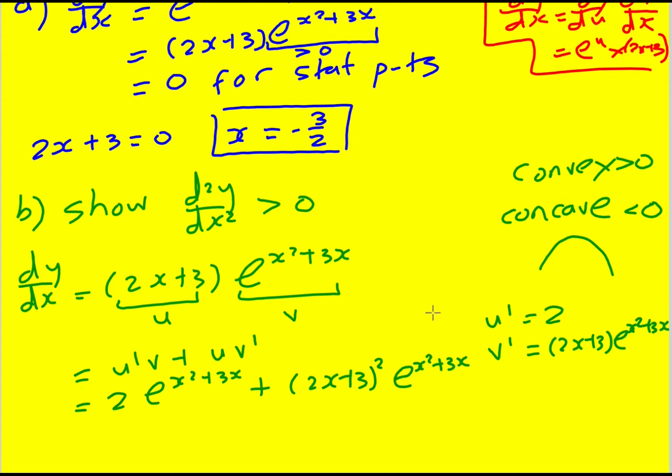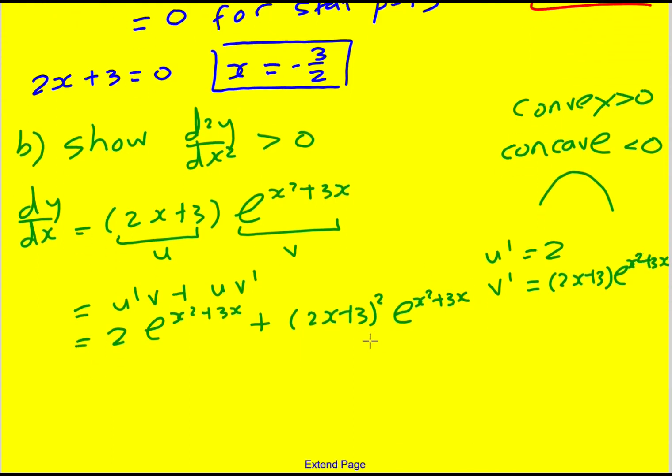Just need to show this is always greater than 0. Don't try to set it greater than 0 and solve. I want to show it's always greater than 0, a slightly different strategy. I can factorize out e to the x squared plus 3x.